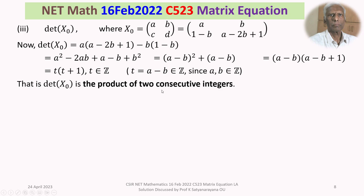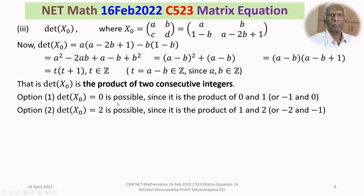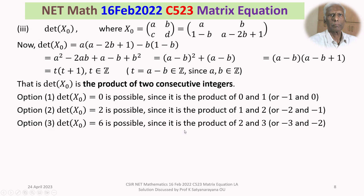Let us check each option. Option 1: det(X₀) = 0 is possible, since 0 = 0×1 = (−1)×0. Option 2: det(X₀) = 2 is possible, since 2 = 1×2 = (−2)×(−1), consecutive integers. Option 3: det(X₀) = 6 is also possible, since 6 = 2×3 or (−3)×(−2). So the first three options are all possible.